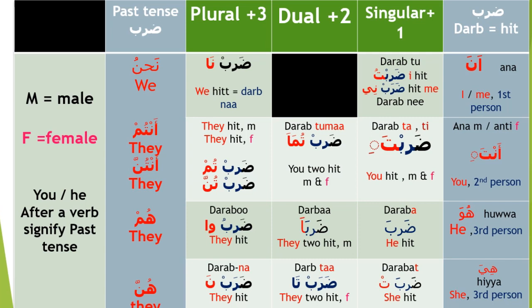For singular: Tharabtu — I hit. Tharabani — Hit me. Tharabta or Tharabti — You hit (male and female). Tharabaa — He hit. Varabat — She hit.